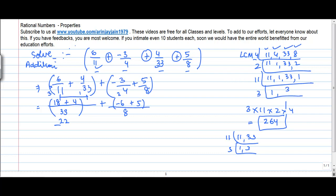18 plus 4 gives me 22 divided by 33. Plus, minus 6 plus 5 gives me minus 1 divided by 8. Well, 22 is divisible by 11 which gives me 2. This gives me 3. My equation becomes 2 upon 3 minus 1 upon 8.